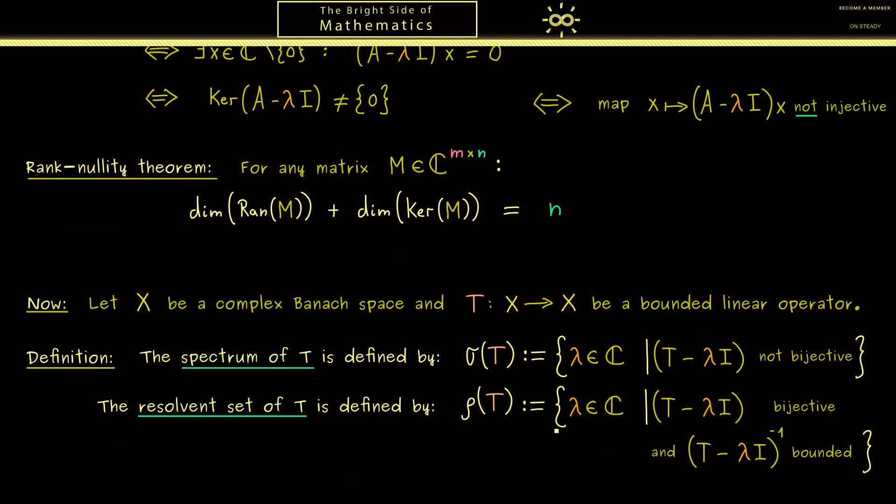The set looks very similar, but now we look at all the complex numbers λ where this map is indeed bijective and the inverse is bounded. So in some sense these are the good points because there we can invert our bounded operator.